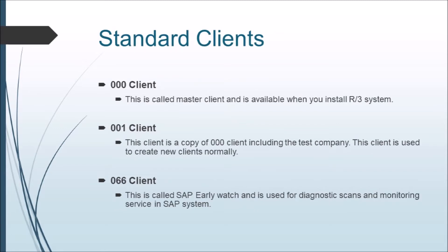By default, SAP comes with three standard clients: 000, 001, and 066. The 000 client is found in the system as soon as R3 software is installed — this is called the master client. Client 000 contains a sample organizational structure of a test company and includes parameters for all applications, standard settings, and configurations to control standard transactions. It contains client independent data, and SAP suggests not to customize client 000.